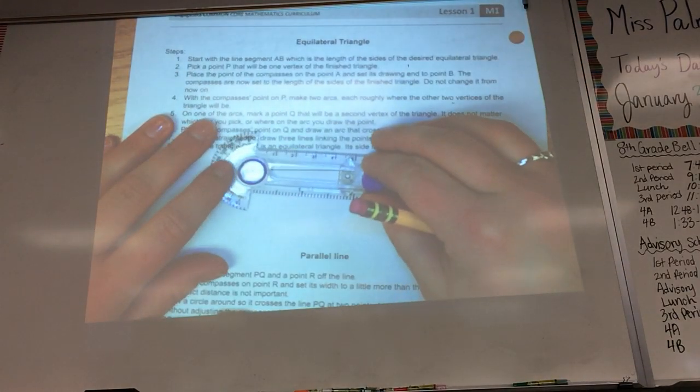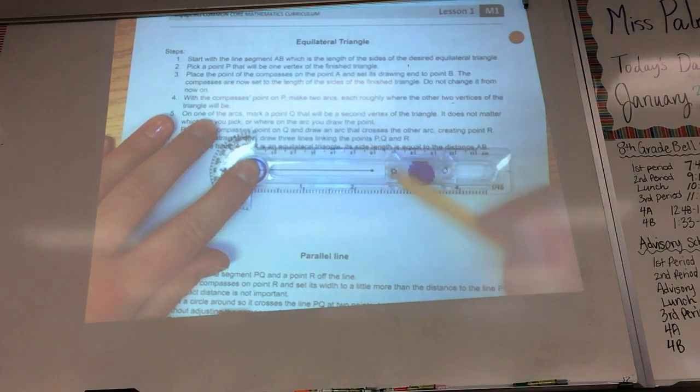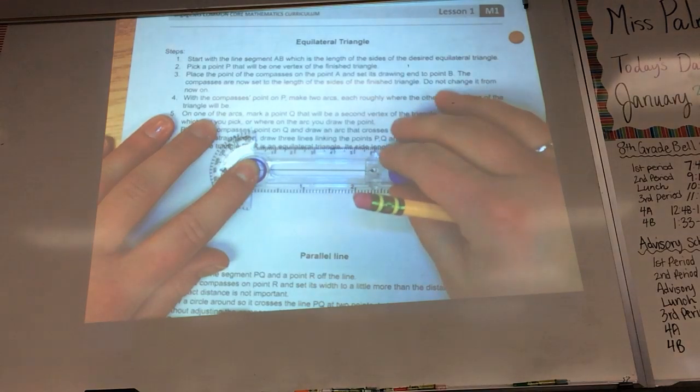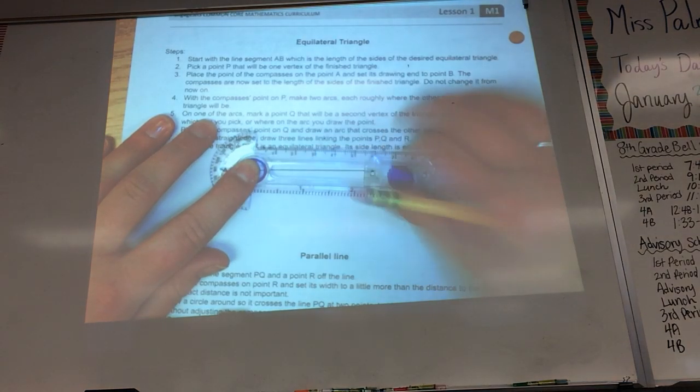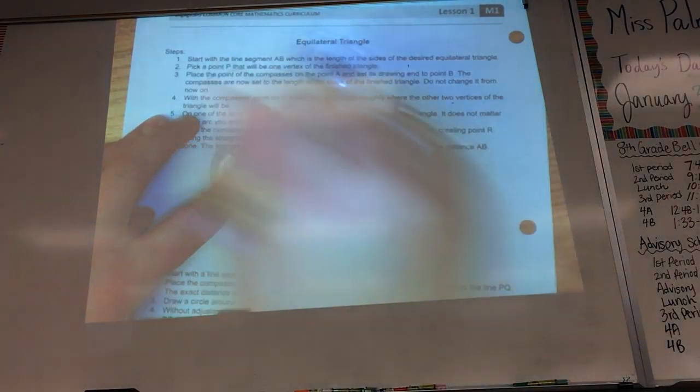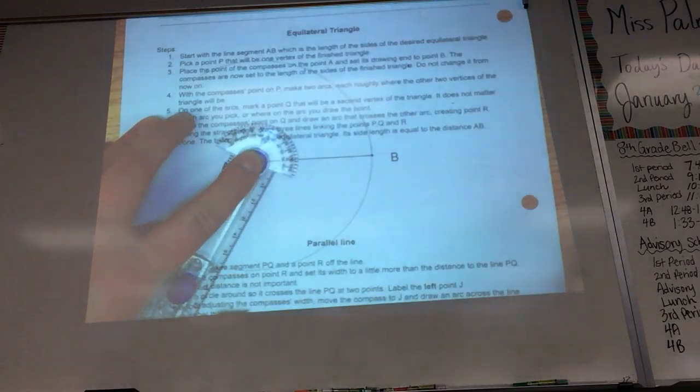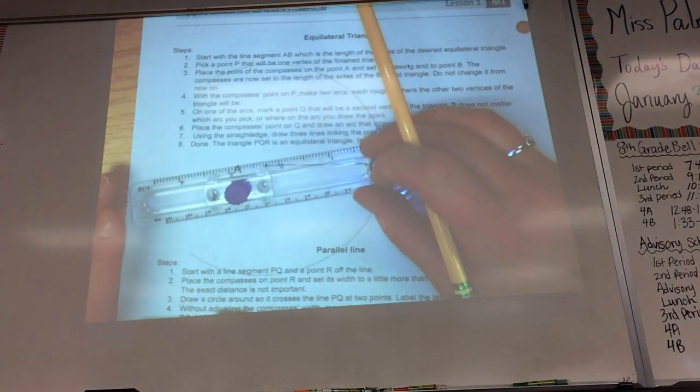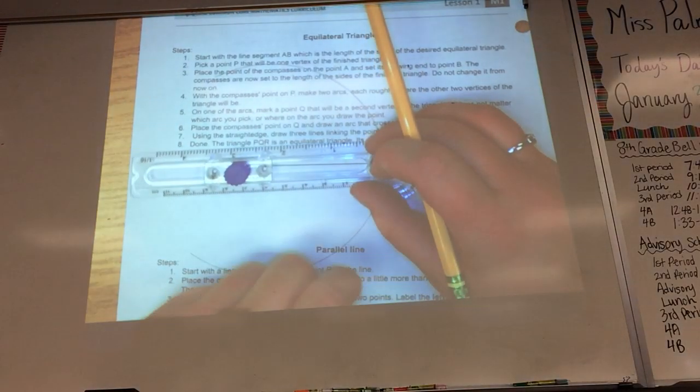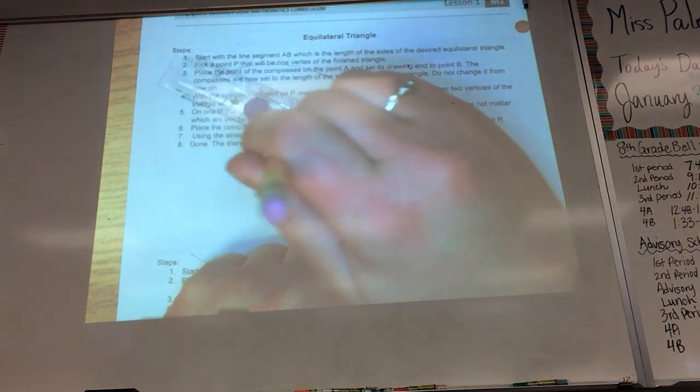This is kind of like the line segment bisector. Except for that I'm going to line this up to be the exact size of this line segment. And then I'm going to create my circle top and bottom.